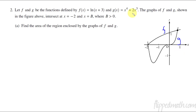Hopefully you can recognize that x to the fourth is a polynomial and it's going to have some curves in it, as opposed to the natural log of (x + 3), which is just the natural log curve shifted left. So this one's my F, this one's my G. That's important because we have to know which one is above the other in order to find the area.